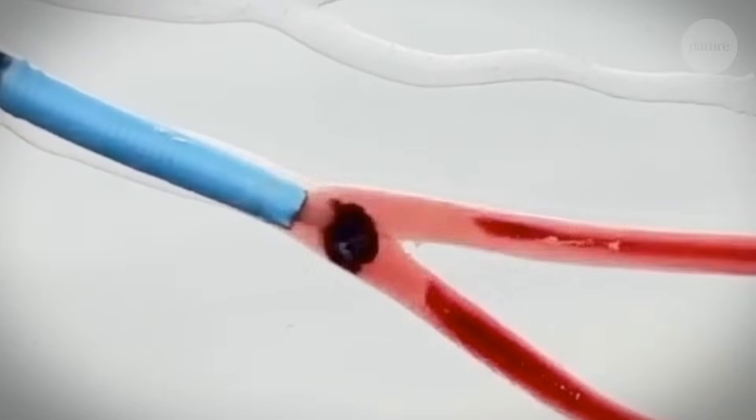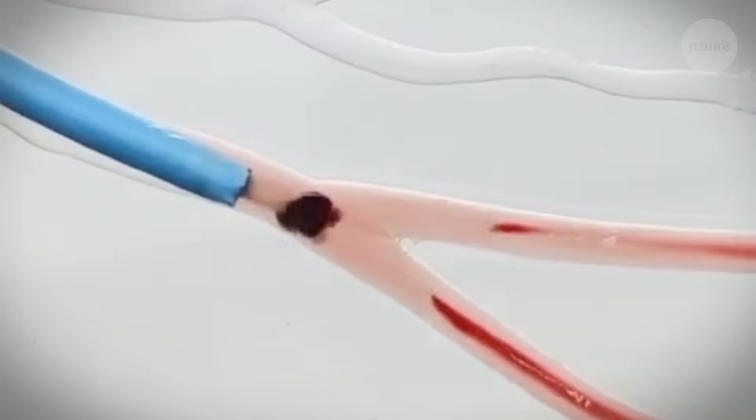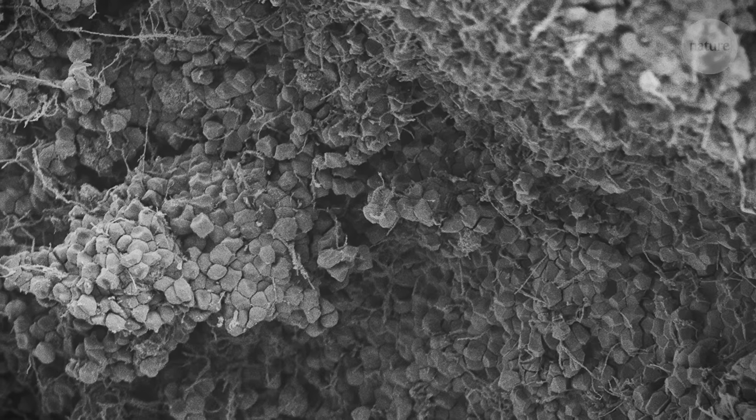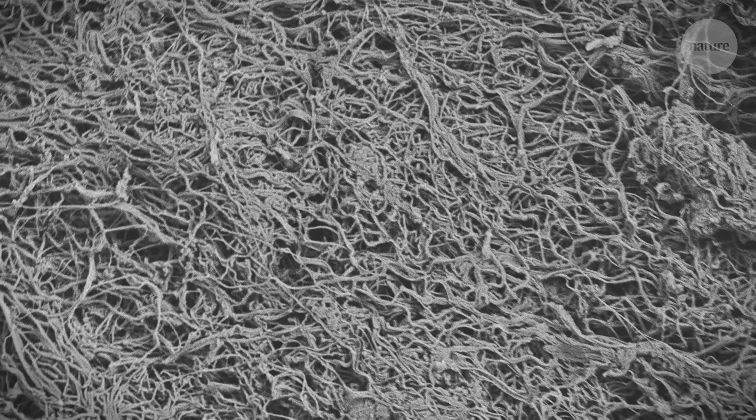The red blood cells get squeezed out leaving just a small dense ball of fibrin. This is what the clot starts off looking like under a microscope full of red blood cells. And here afterwards you can see the protein strands that are left.